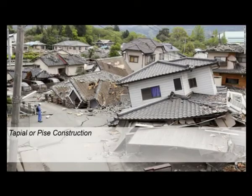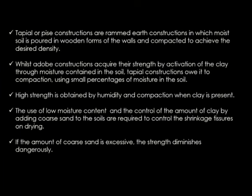The next construction type is tapial or pise construction. Tapial or pise constructions are rammed earth constructions in which moist soil is poured into wooden forms of the walls and compacted to achieve the desired density. You have wooden forms on either side of the wall, and in between that, moist soil is poured in and then compacted to achieve the required density. While adobe constructions derive their strength by activation of the clay through moisture contained in the soil, tapial constructions owe their strength to compaction using a small percentage of moisture in the soil.